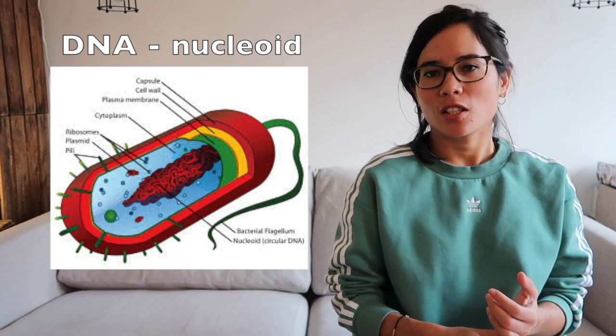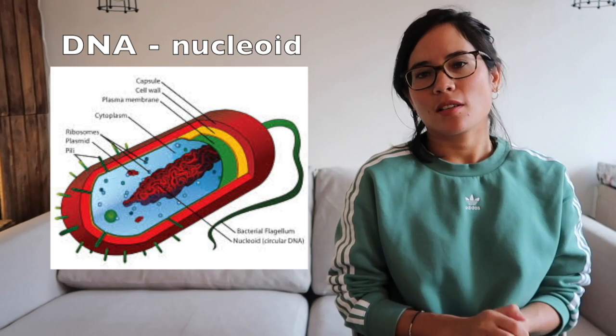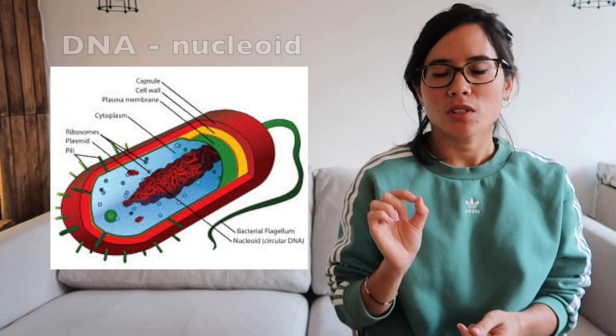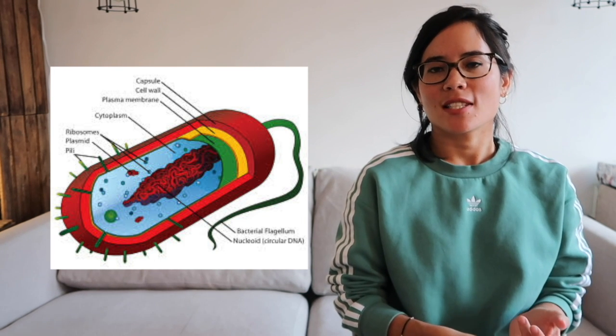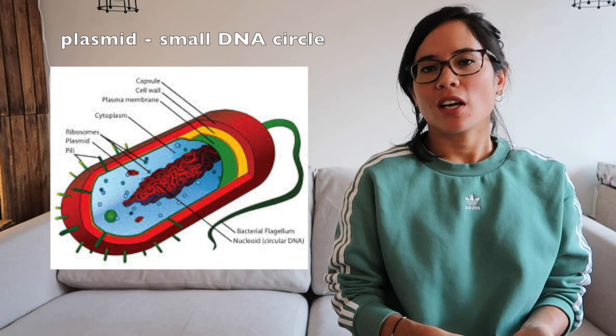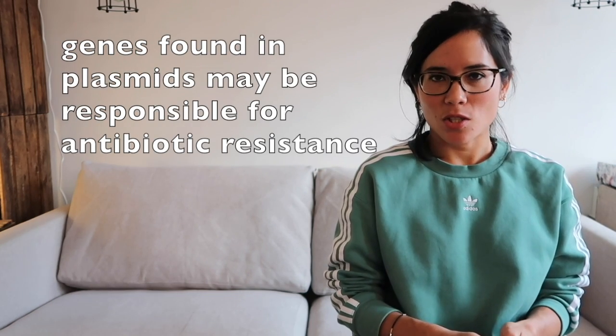Gram was actually the name of the scientist who discovered this stain. Bacterial cells don't contain membrane-bound organelles, so you won't find a nucleus or mitochondria. Instead, DNA exists as a circular strand or chromosome called the nucleoid. They also have genes in the form of plasmids — small circles of DNA involved in genetic engineering. Importantly, plasmids contain genes responsible for antibiotic resistance, which is why bacteria are increasingly able to mutate and resist antibiotics.